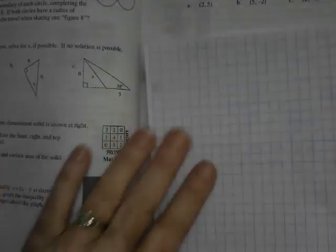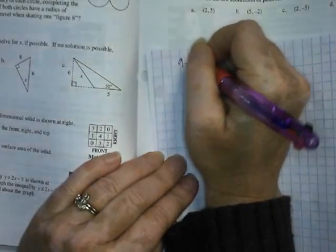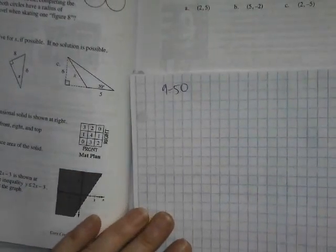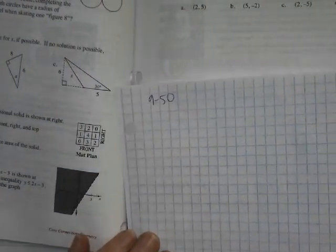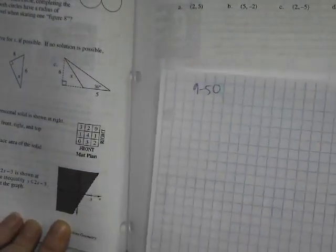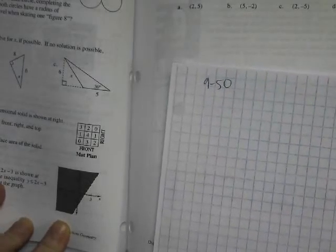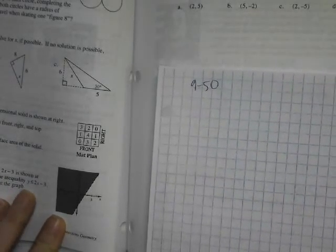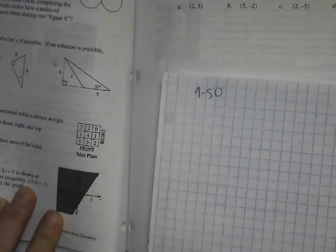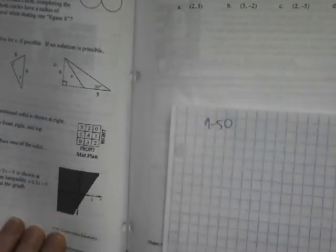This is 9-50, and it says the graph of the inequality is shown in our book right here. That's y is greater than 2x minus 3. On graph paper, graph the inequality y is less than or equal to 2x minus 3.